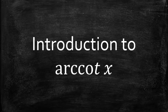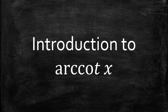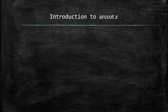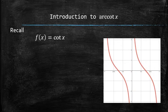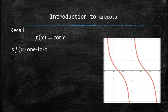Next, we will introduce a new function called the arc cotangent. Let's recall the cotangent of x function and its graph, and answer the following questions. Is this function 1 to 1? The answer is no, because it doesn't pass the horizontal line test.